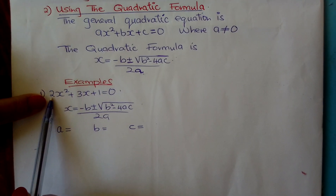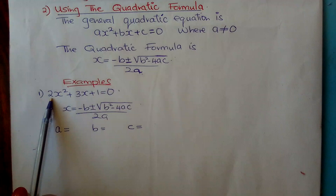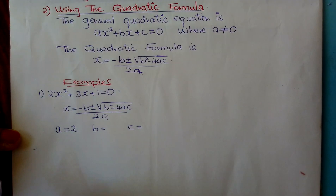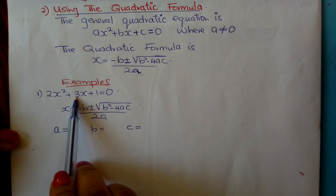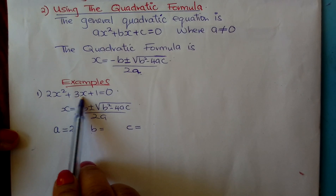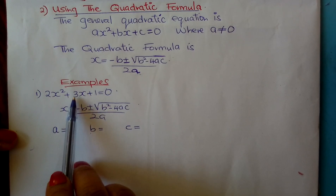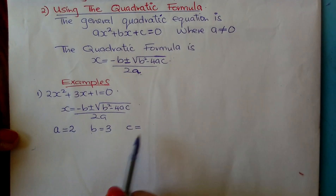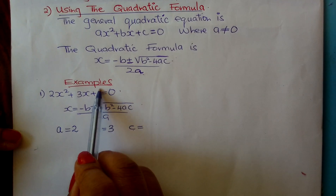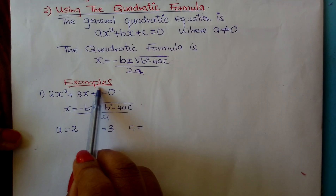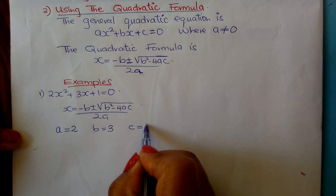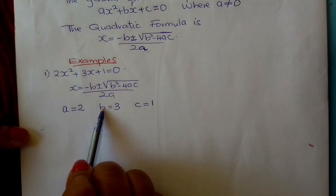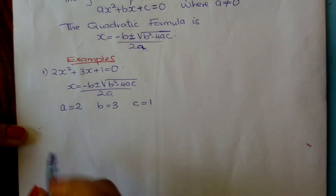Your a refers to the coefficient of x squared, and in our case it is 2. Your b refers to the coefficient of x, the second term, which is 3. Your c refers to the constant, which is 1 in this case. From there, you substitute these three values into the formula.